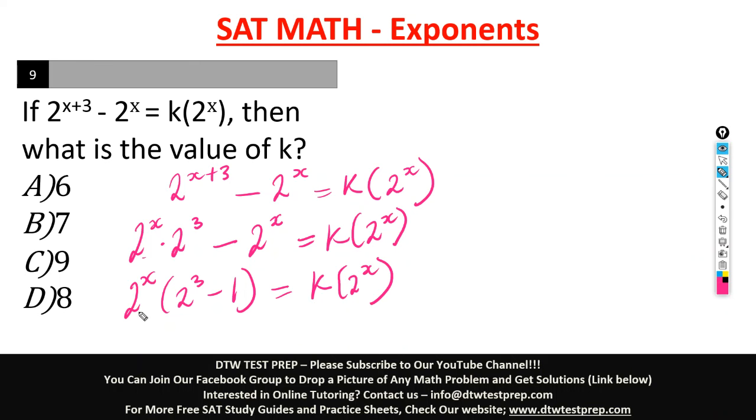From here, we have 2 raised to the power of x here, 2 raised to the power of x here. We can cancel out because what is binding this 2 here is multiplication and also here is multiplication. So we can cancel this out. So what are we left with? We're left with 2 raised to the power of 3 minus 1 equal to k.